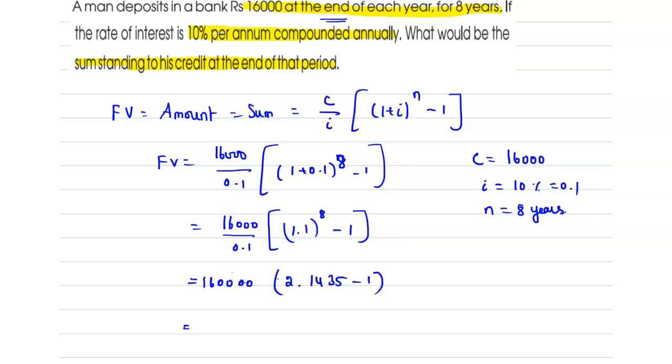We will get it as 2.1435 minus 1 equals 1.1435. Then multiply this with 1,60,000, which is 1,82,960, which is approximately 1,83,000 rupees. So this is the total amount the person may receive at the end of 8 years at the rate of 10% per annum compounded annually.